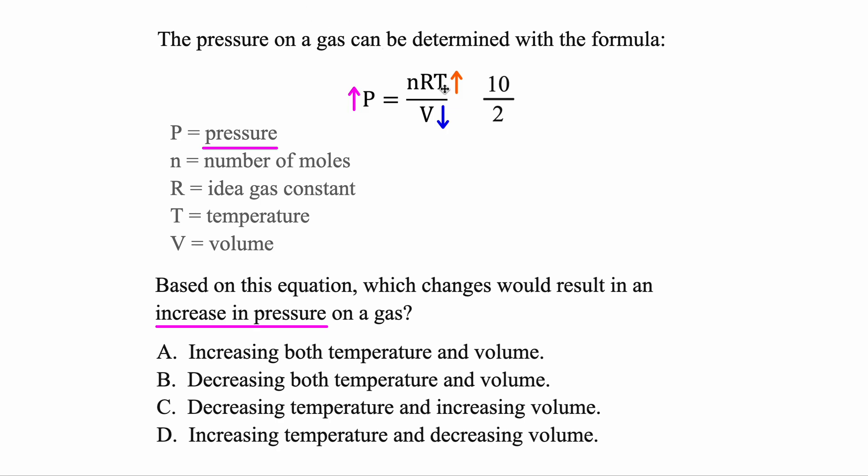But let's check that that works. Once again, let's say the tops multiply to 10, the bottom value is 2. 10 divided by 2, we start off with a pressure of 5 to begin with.